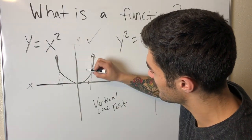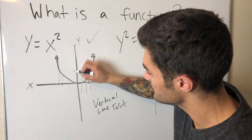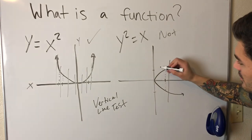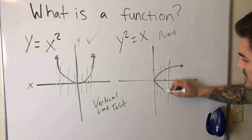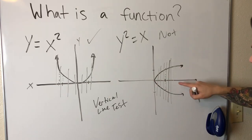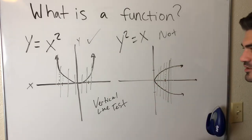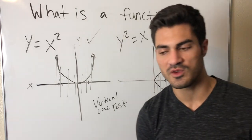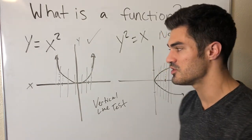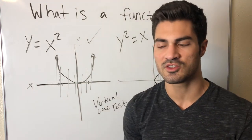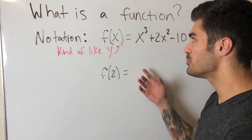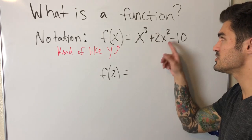For y = x², anywhere you draw a vertical line it intersects only one point — it passes the vertical line test. For y² = x, at any x-value greater than zero the vertical line intersects two points, breaking the test. You can graph an equation and apply the vertical line test, or apply it to a given graph — it's a simple way to determine whether an equation is a function.